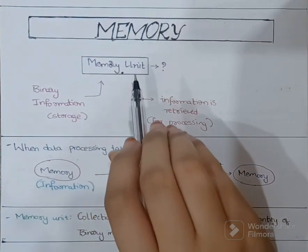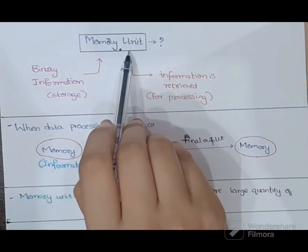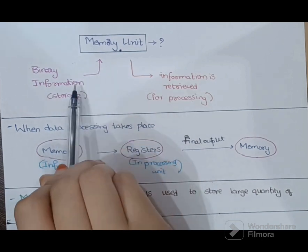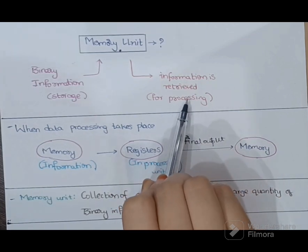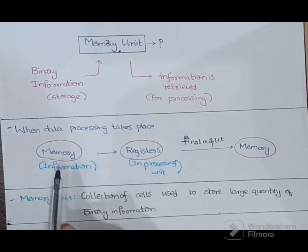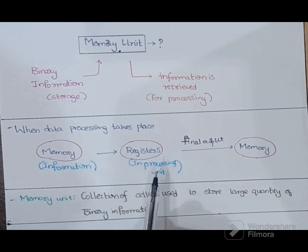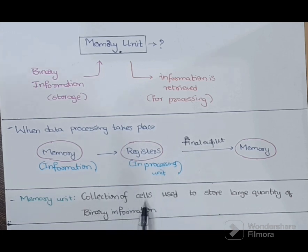Today we are going to discuss the topic memory. A memory unit is a device in which binary information is stored. The stored binary information is retrieved when it is required for processing. The information stored in memory is given to the registers in the processing unit, and after processing is done, the final output is taken back to the memory. In short, a memory unit is a collection of cells which can store a large quantity of binary information.